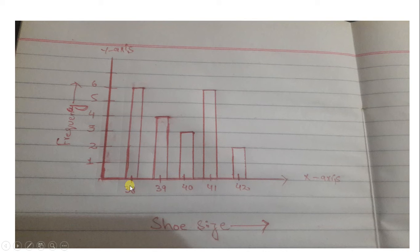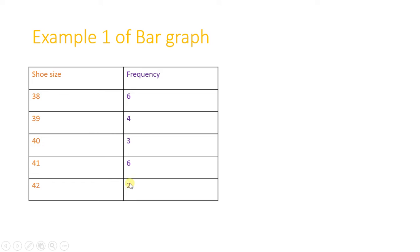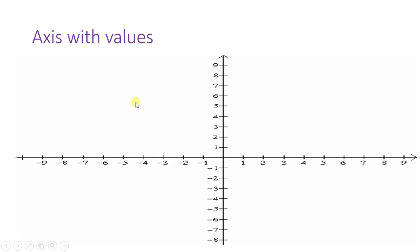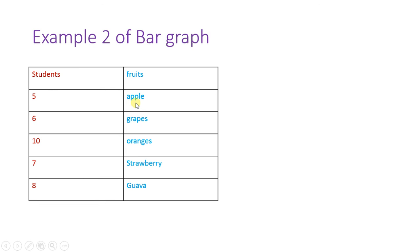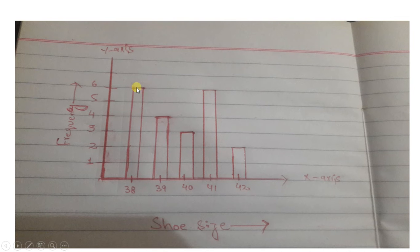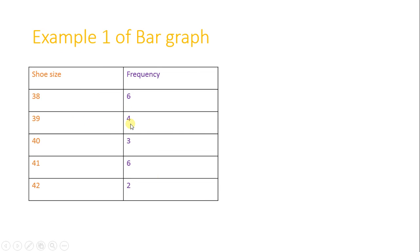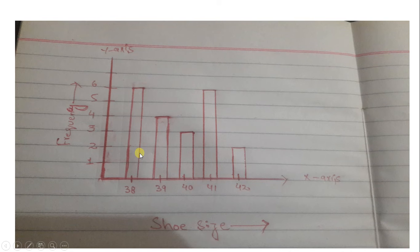I have to see what is the frequency of 38 size. The frequency of 38 size is 6. I will draw a vertical bar on 38 size. Now I have to see what is the frequency of 39 size, and similarly I will put a bar on the 39 size.